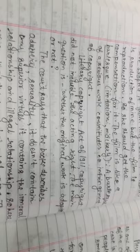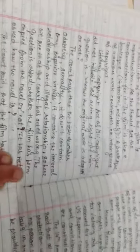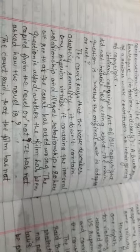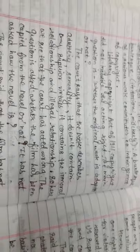The Literary Copyright Act of 1911 copyright did not include the acting right. The main question is whether the original work is adopted or not. The court also says that the book describes adultery and sexuality. It doesn't contain any superior virtues; it contains informal relationships and illegal relationships.